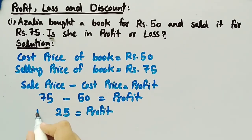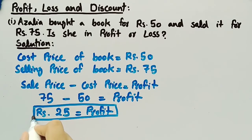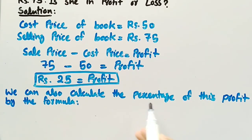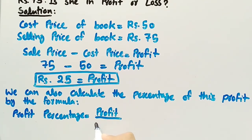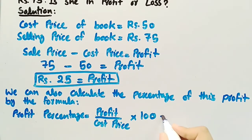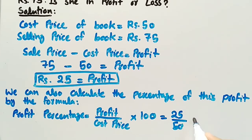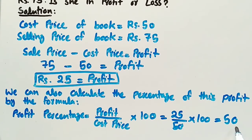So 75 minus 50 equals 25, meaning the profit is rupees 25. We can also calculate the percentage of this profit using the formula: profit percentage equals profit divided by cost price, multiplied by 100. Applying this, profit percentage equals 25 divided by 50, multiplied by 100, which equals 50%. So in this case the profit percentage is 50%.